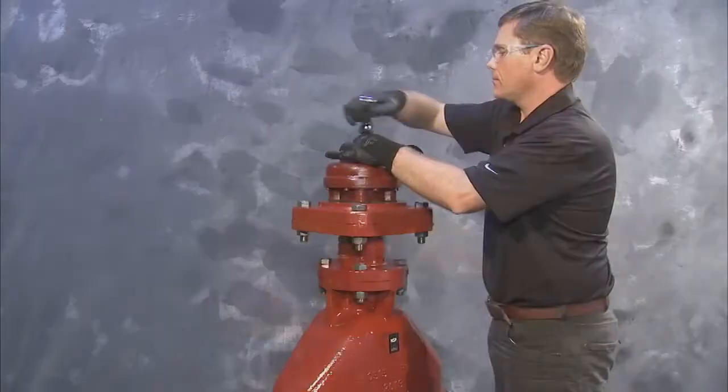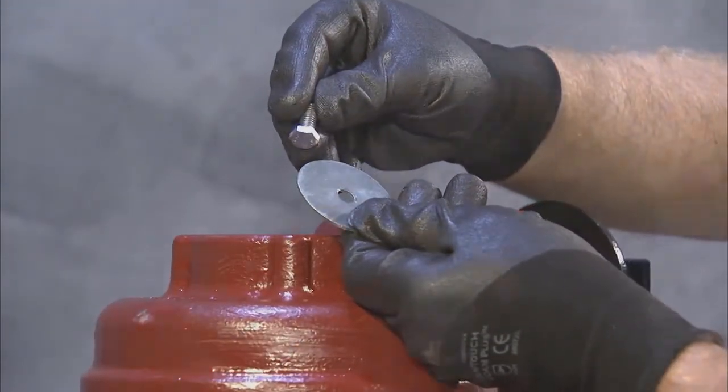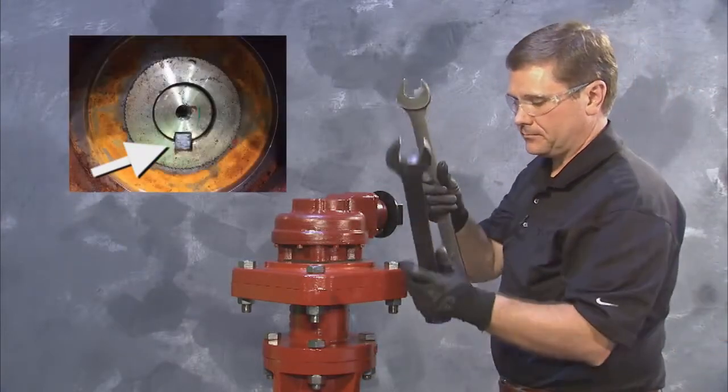With this done, remove the exposed stem screw and washer and set them aside for later use. On top of the valve stem, the key and keyway should all be visible now.